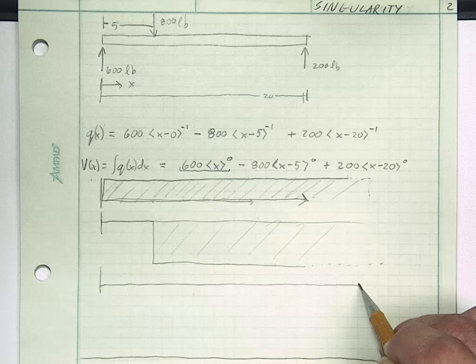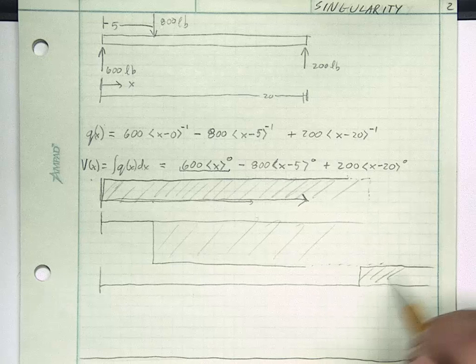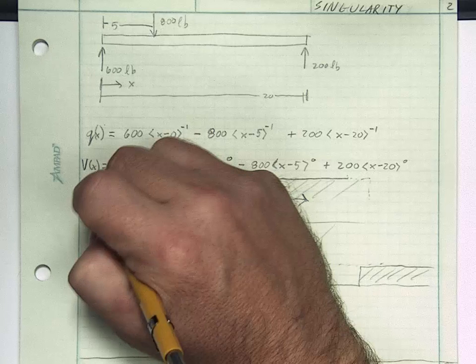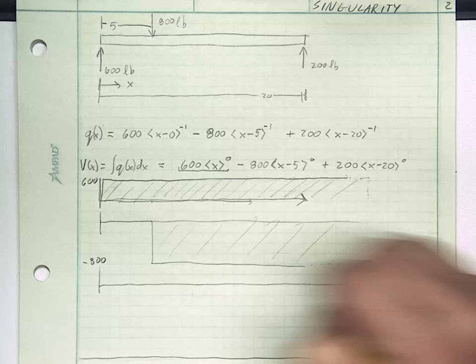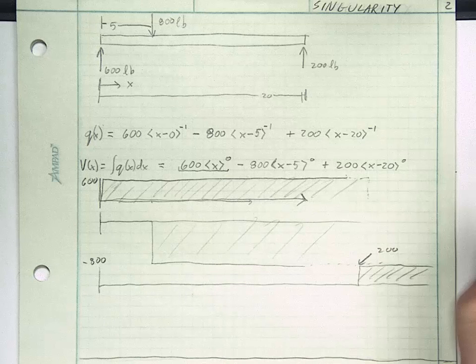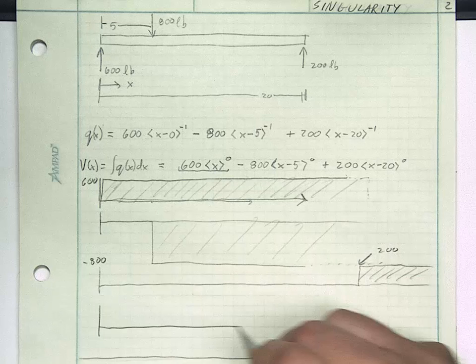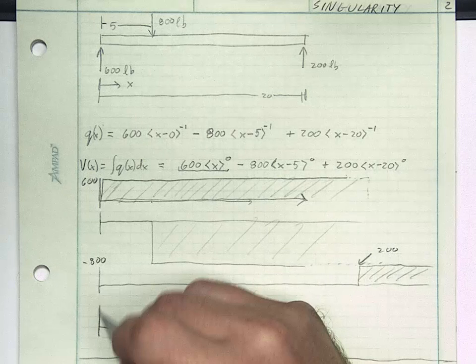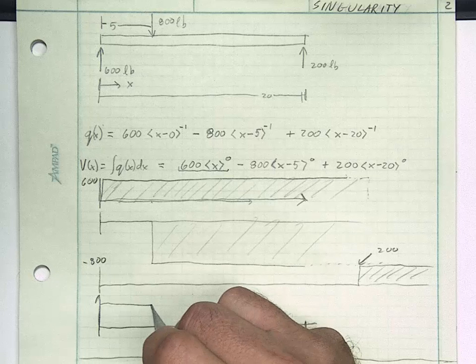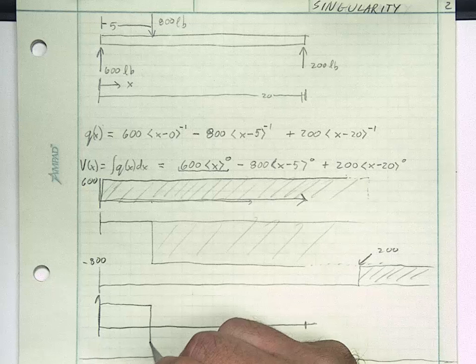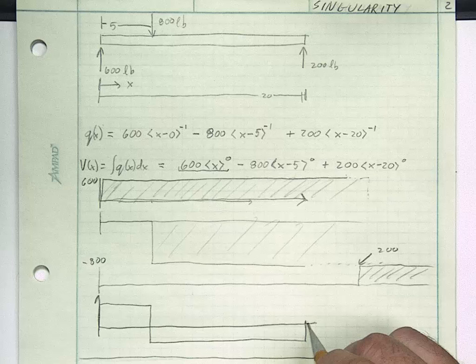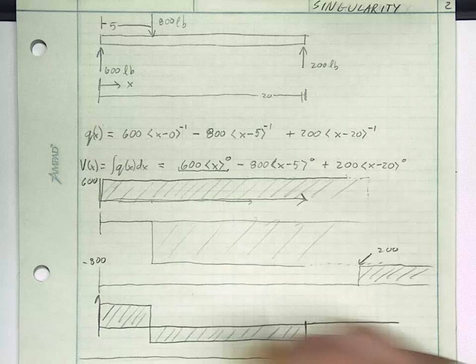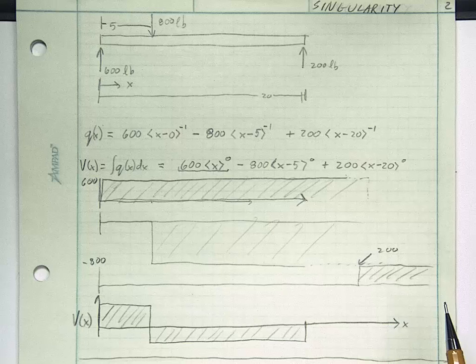The third one is positive 200 again and that happens at 20. Right here at 20, this goes up and there's its contribution. It turns out that if you add these together, positive 600, minus 800, and then positive 200 here. When you sum them all together, superposition, recognizing how they're all playing with each other, what you'll get is exactly what we got before. It's going to go up to 600 at the beginning. At 5 it's going to go down 800, which will take us to minus 200. And at 20 it's going to go up 200 and stay there at 0. So our shear diagram matches exactly what we found using free body diagrams.